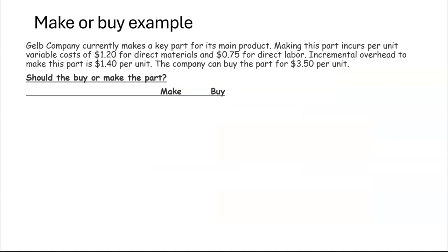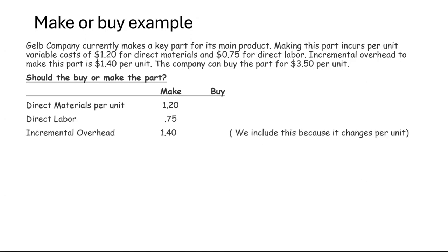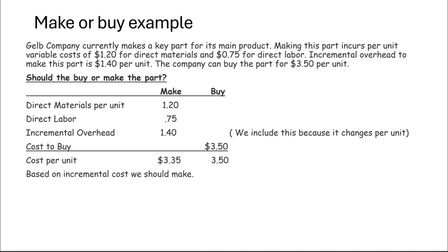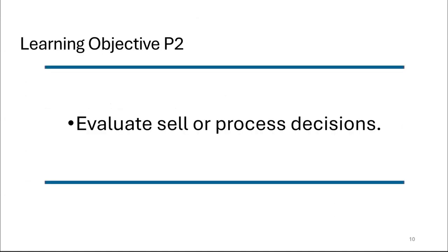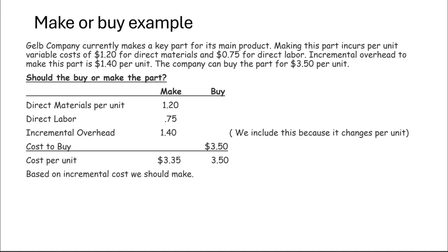Here is our make or buy example. We have a key part for a machine and we're deciding whether to make it or buy it. We know our incremental costs, which are variable costs per unit including overhead that has a variable cost. We list all variable costs including incremental overhead and compare them. In this example, having included all the costs, we should make it because it's cheaper than buying it.